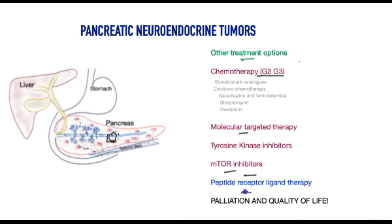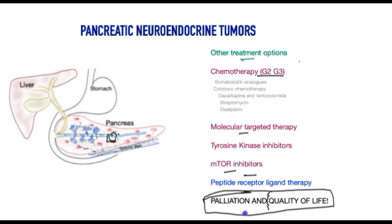Finally and most importantly, those caring for these patients must not lose sight of quality of life — identifying the effect of treatment on the patient and whether it is worthwhile to pursue sometimes toxic management options with little benefit. These are highly complex tumour conditions that require teamwork, expertise, and facilities to achieve optimum outcomes for patients.